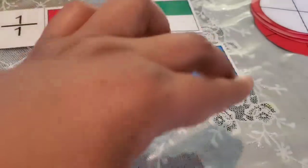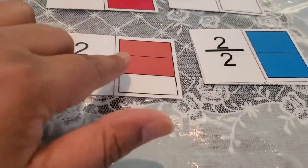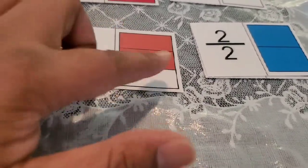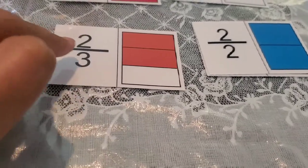Likewise here, the bottom number is telling you it's three pieces. One shape, but it's cut into three pieces, and two of those have been shaded, which is the top number that is telling you.